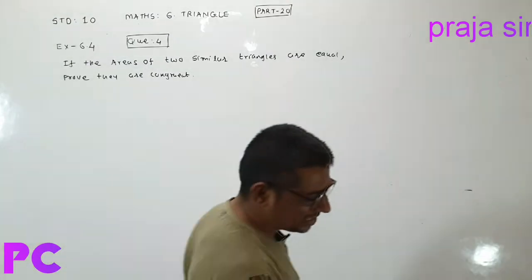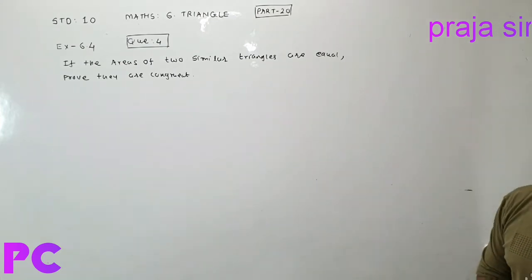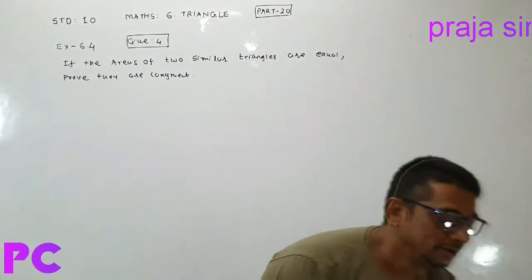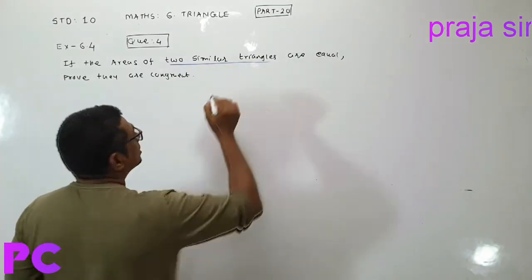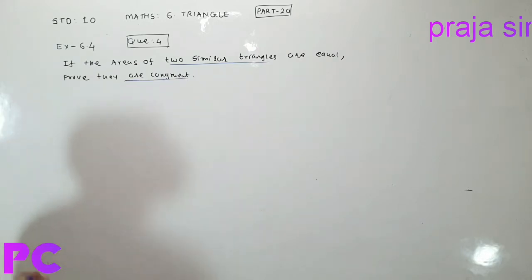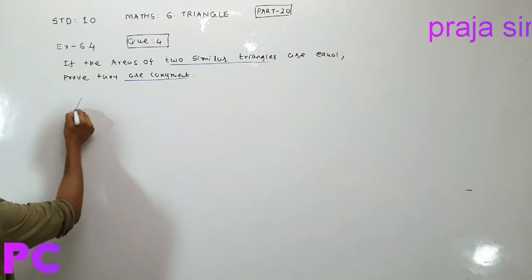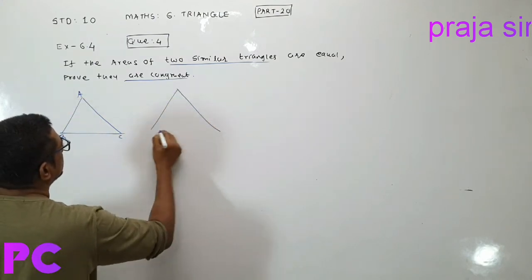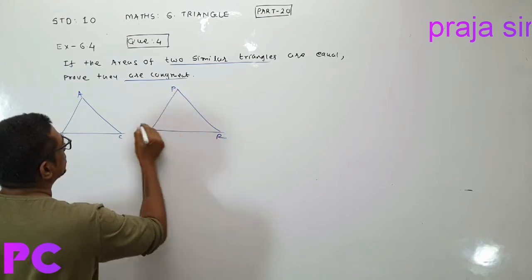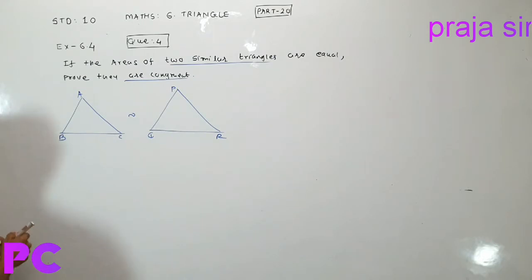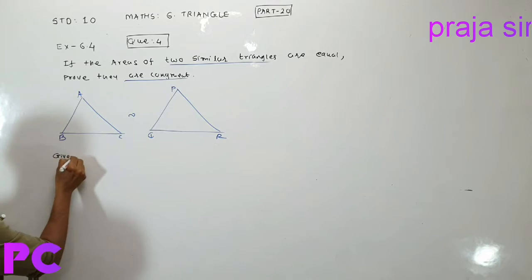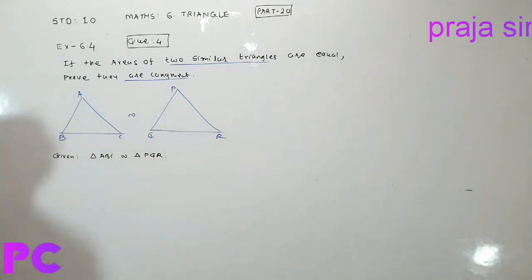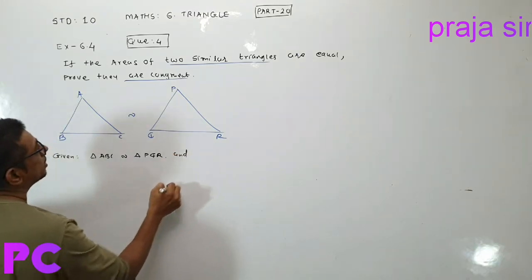Good morning students. Question number 4, exercise 6.4: if the areas of two similar triangles are equal, prove they are congruent. This is one triangle ABC and this is another triangle PQR, and they are given both are similar. Given: triangle ABC is similar to triangle PQR, and area of ABC is equal to area of PQR.